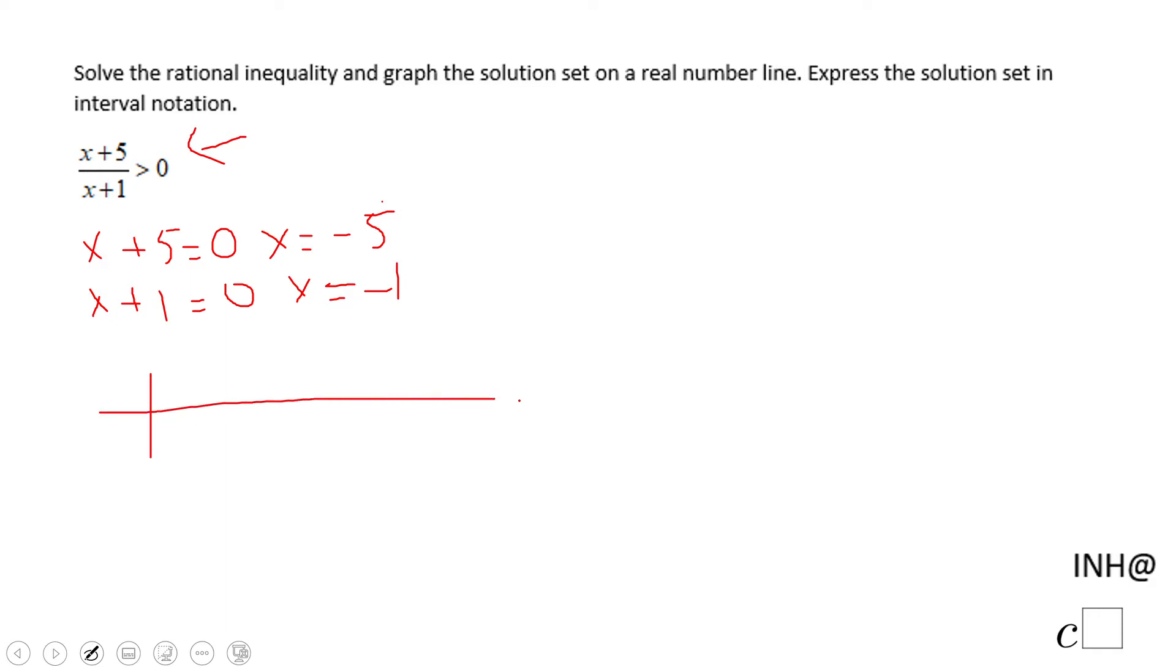And here we're going to use a sign table. Let me call this rational function f of x. Okay, so the rational function f of x is x plus 5 over x plus 1, and I'm going to put these two values that we found in the previous step, negative 1 and negative 5. I'm going to start with negative 5 first and negative 1 second.